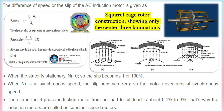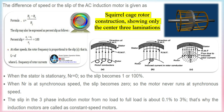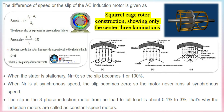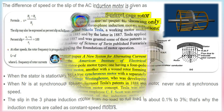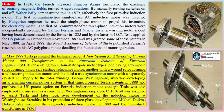If the rotor speed exceeds the stator field speed, no current will be induced in the rotor, because the reason for rotor rotation is the relative speed between the rotor and the stator magnetic fields. This difference between the stator and rotor field speeds is called slip. This is why a three-phase motor is called an asynchronous machine. The rotor speed nr must always be less than the stator field speed ns, and the difference between these two parameters depends on the load on the motor.